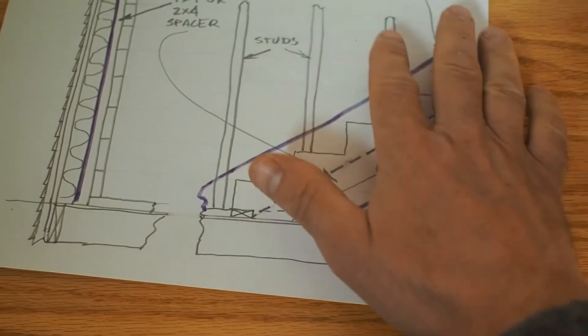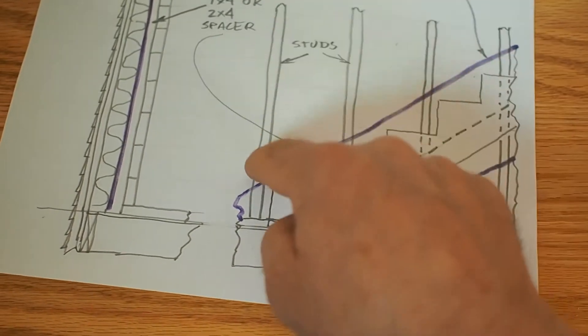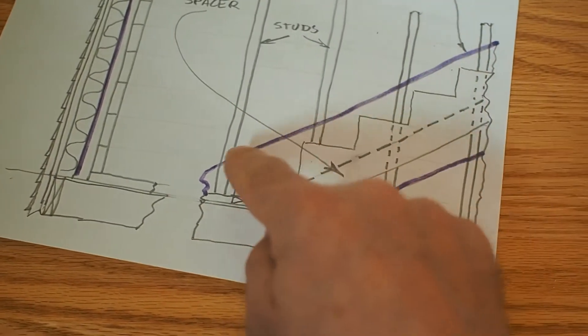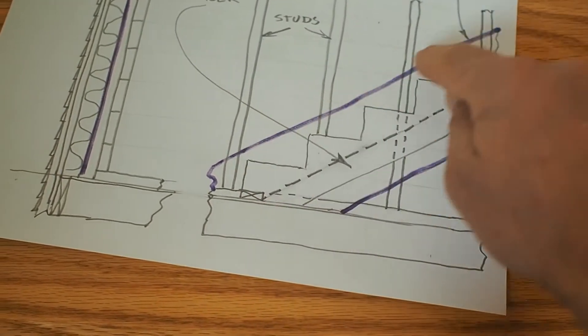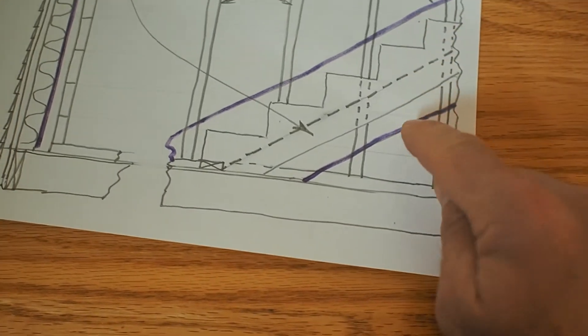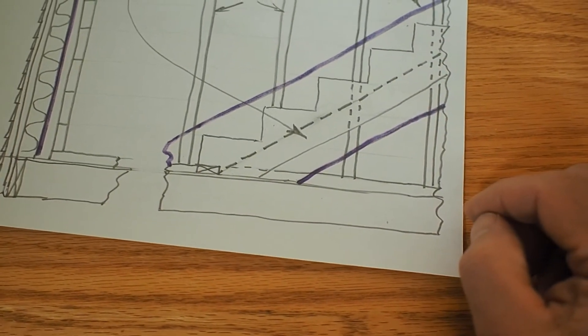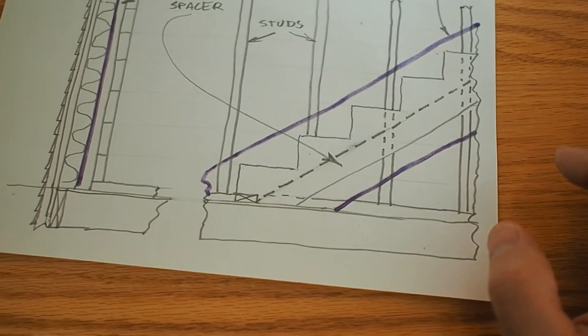When the vapor barrier went on the studs, it gets stapled onto the studs here and it gets sealed against the piece of plastic that's exposed on the top of the stairs here. And the same thing can happen on the bottom of the stairs. So that takes care of the continuous vapor barrier.